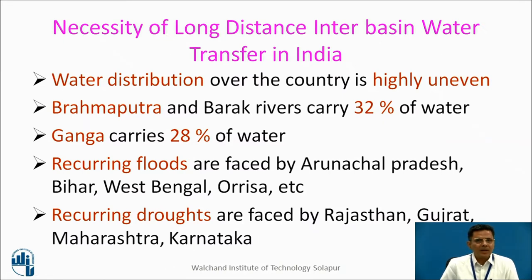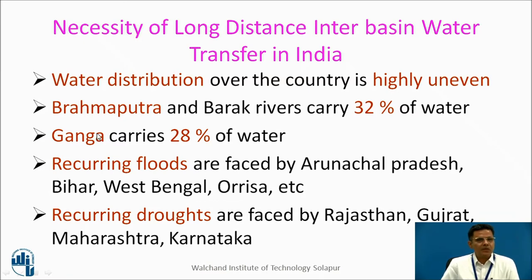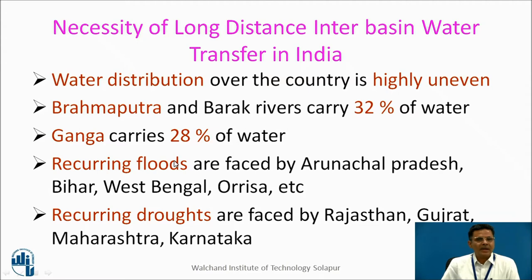What is the necessity of long-distance interbasin transfers for India? The first reason is that water distribution over the country is highly uneven. Brahmaputra and Barak rivers carry 32% of water and the Ganga system carries 28% — meaning 60% of water is in Brahmaputra and Ganga Basins, while remaining rivers have just 40%. Recurring floods are faced by Arunachal, Bihar, West Bengal and Orissa, whereas recurring droughts are faced by Rajasthan, Gujarat, Maharashtra and Karnataka. If additional water available in North Indian rivers is brought to South Indian rivers, we can mitigate the droughts frequently faced by Maharashtra, Karnataka, Tamil Nadu and other southern states.